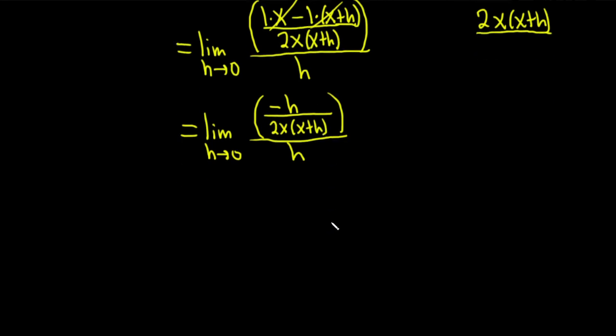Very nice. So this is equal to the limit as h approaches 0. So now we have this fraction and it's being divided by h. You can really think of this as h over 1. So when you divide, you really multiply by the reciprocal. So this will be negative h over 2x, x plus h, and then times 1 over h. Because when we divide, we multiply by the reciprocal.